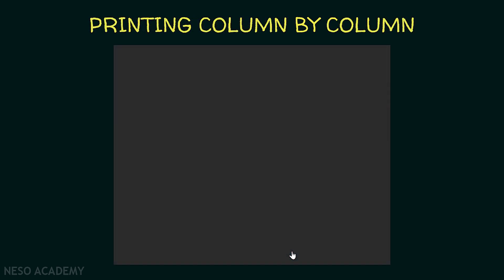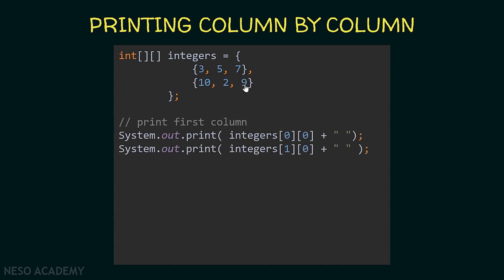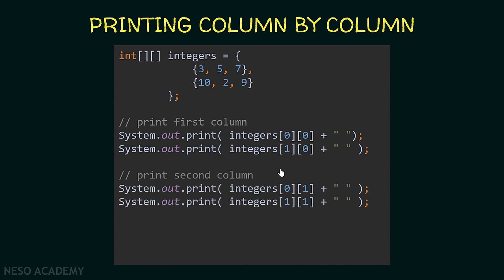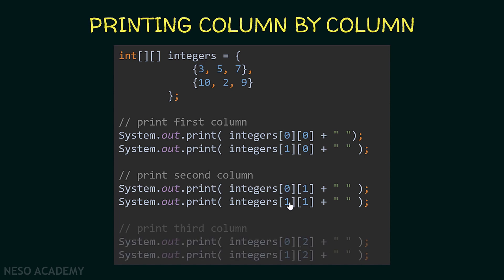Now let's talk about printing column by column. We have the same array written to make things clearer. Previously we printed row by row: three, five, seven and then ten, two, nine. Now we want to print column by column: three and ten, then five and two, and finally seven and nine. To print the first column we print integers[0][0] and then integers[1][0] — the index of the column is the same while the index of the row is changing. For the second column the column index is one, and for the third column it is two, printing the first and second elements each time.